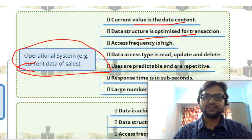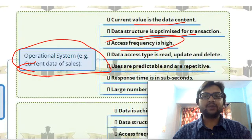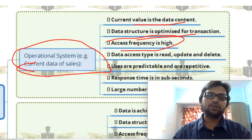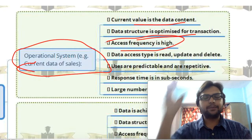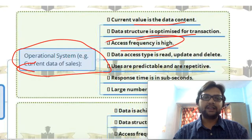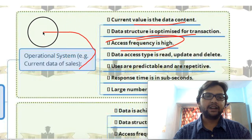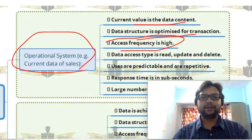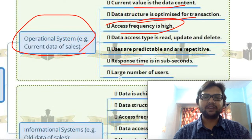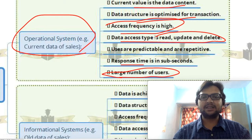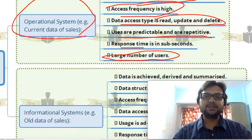Access frequency is very high in an operational system because we have segregated historical and current data. We create an operational system that only keeps current data required for day-to-day operations. Response time is good, we can manage a large number of current users, data access type is easy — we can read, update, or delete data — and users are predictable and repetitive.